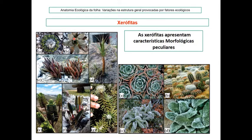Na base dessas folhas há tricomas que absorvem água. No caso das plantas da família Crassulaceae, quando o orvalho se condensa, a água é direcionada às raízes. A presença de grande quantidade de tricomas ajuda a refletir os raios solares e cria um microclima que evita a perda de água quando os estômatos são abertos para captar CO2.